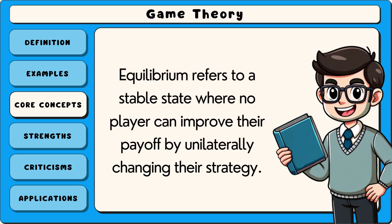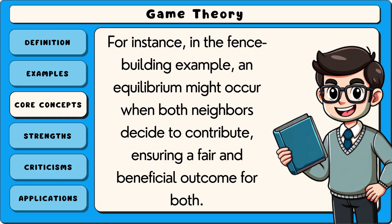Equilibrium refers to a stable state where no player can improve their payoff by unilaterally changing their strategy. For instance, in the fence-building example, an equilibrium might occur when both neighbours decide to contribute, ensuring a fair and beneficial outcome for both.